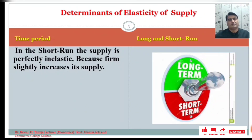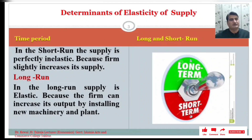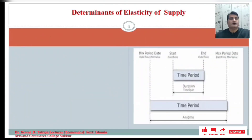Whereas in the long run — the period during which all costs are variable — the firm can shift from one place to another or install new machinery or a plant. So in the long run the supply is elastic.